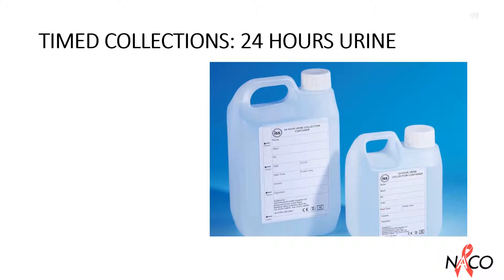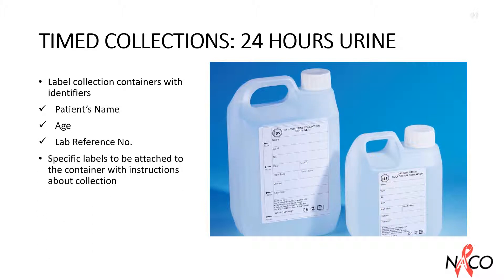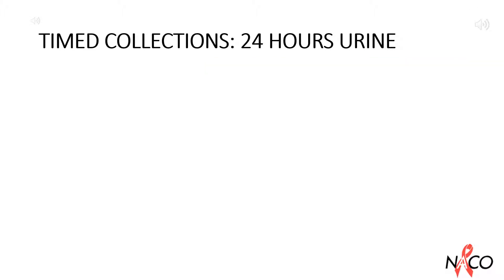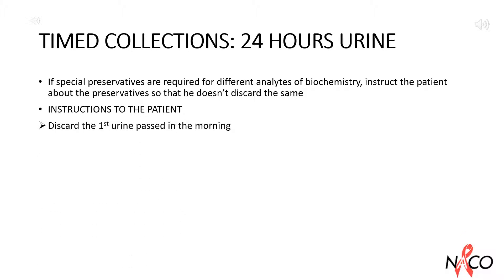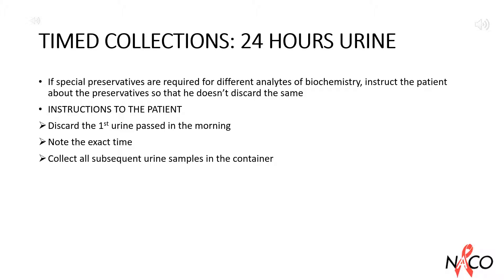For 24-hour urine collection, all collection containers have to be labelled with identifiers like patient's name, age and lab reference number. Specific labels are to be attached to the container with instructions about collection. If specific preservatives are required for different analytes of biochemistry, instruct the patient about the preservative and restrict them from discarding it. Discard the first urine passed in the morning and note down the exact time. From this time onwards, collect all subsequent urine samples in the container. Continue till the exact time the next day and enter the time details on the container.